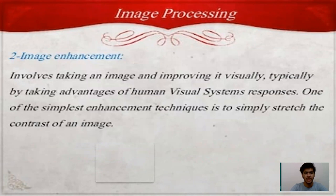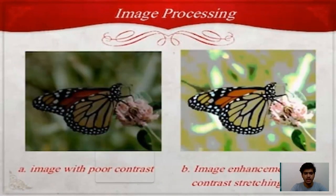The second one is image enhancement. It involves taking an image and improving it visually, typically by taking advantage of human visual system responses. One of the simplest enhancement techniques is to stretch the contrast of an image. We can see pictures of image enhancement — first one includes an image with poor contrast, and the second includes image enhancement with contrast stretching.